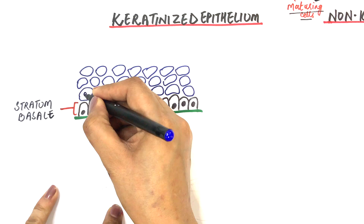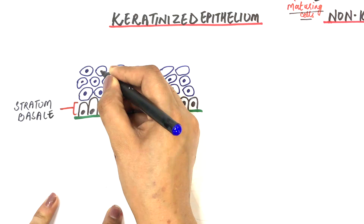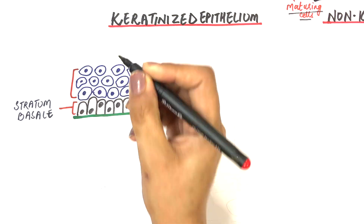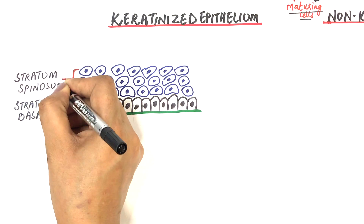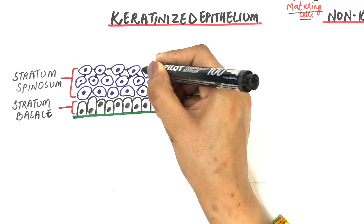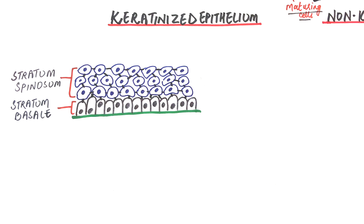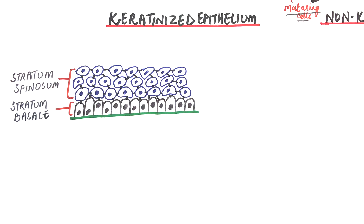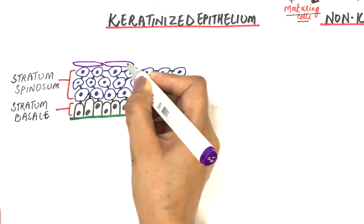They are named the prickle cell layer because after histologic preparation, the cells shrink and get separated from each other except for a very small contact area known as the intercellular bridges or the desmosomes. This alignment, presented by these small contact areas, gives the cells a spiny or prickle-like appearance. In keratinized epithelium, the basal and prickle cell layers represent half to two-thirds of the thickness of the epithelium.